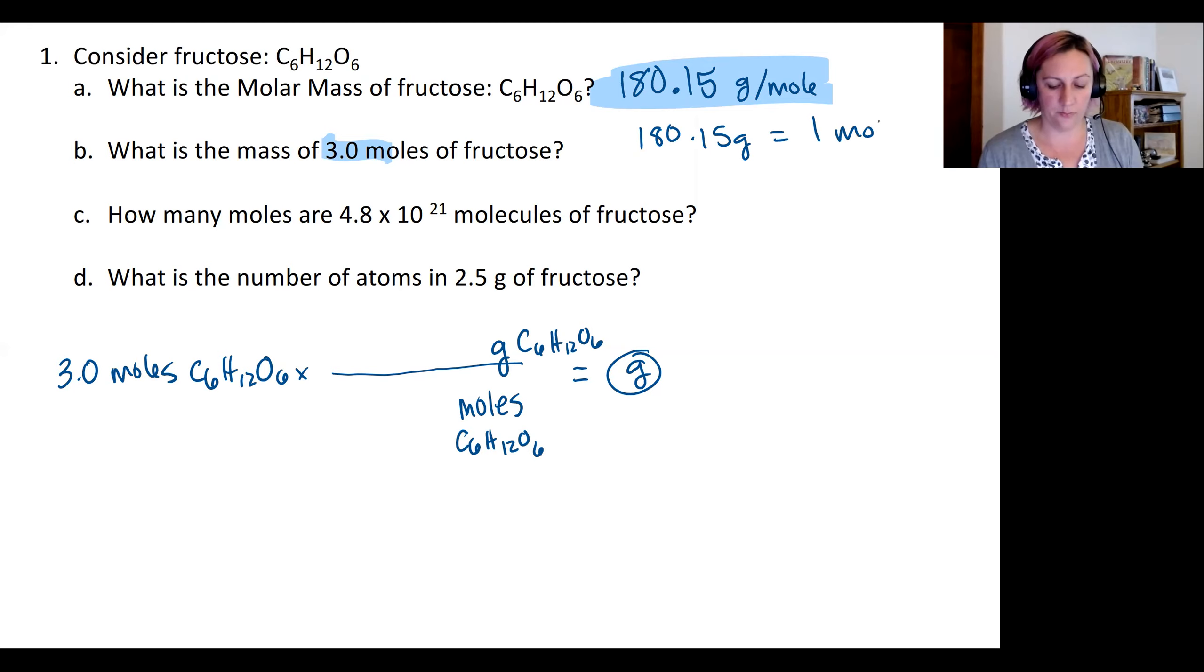We're going to use this molar mass from part A as our conversion factor. Remember we can rewrite this as 180.15 grams equals one mole. I have one mole of my fructose and that will weigh 180.15 grams. So plugging this into my calculator—just 3 times 180.15—I'm going to get a value that is 540.468 grams. Now for significant figures, I have two significant figures in my starting measurement, so I'm going to report two significant figures in my final answer, so I'll round that to 540 grams.